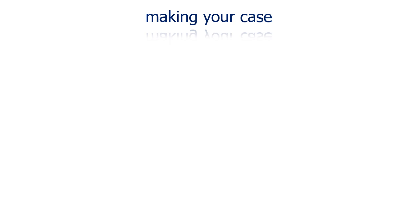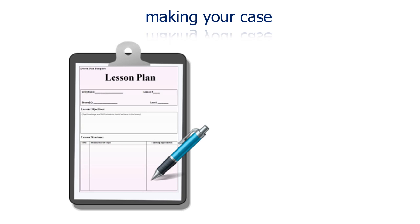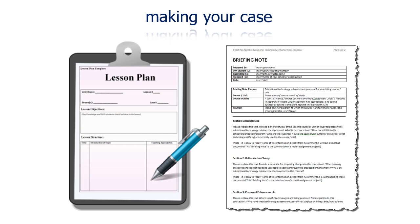Now that you've formally analyzed potential educational technology tools from the perspective of your own teaching and learning needs and context, it's time to piece everything together to make your case. It's important to do this whether you're integrating technology on a small scale in your own classroom or as part of a formal instructional design process. Formally documenting your decisions and rationale helps others to see the justification for your technology choices. It also makes it easier to change course when the need arises.